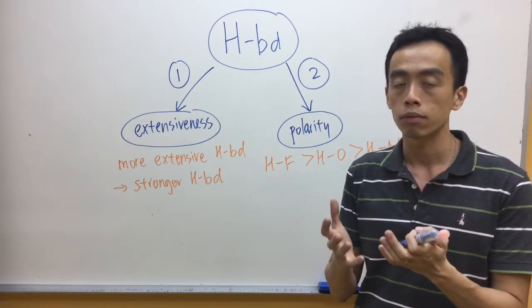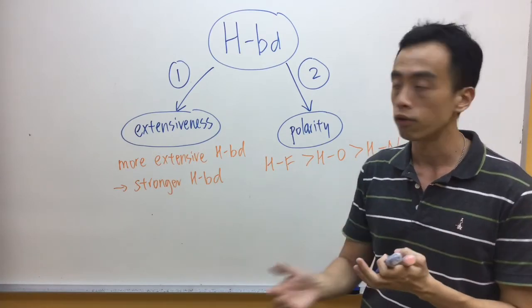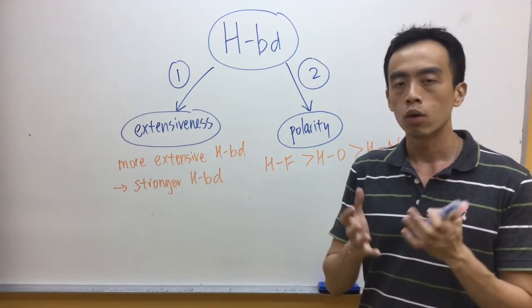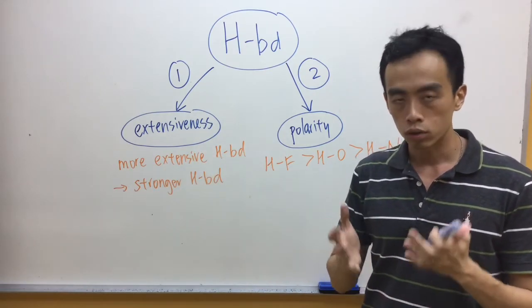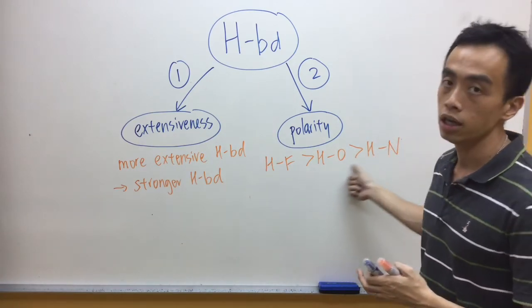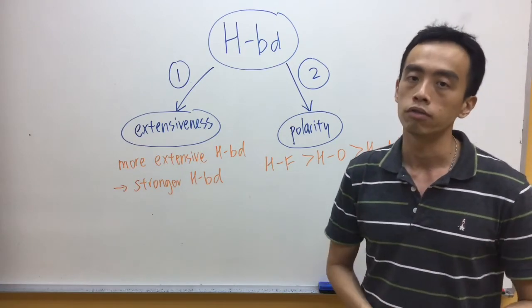When we are comparing two molecules that perform hydrogen bond, the molecule that can form more extensive hydrogen bond will have overall stronger hydrogen bond. When extensiveness is the same, then you look at the polarity of the bond, meaning what type of bonds is present in the two molecules, then you do comparison from that.